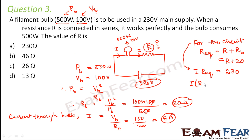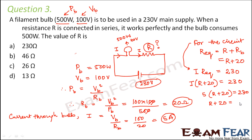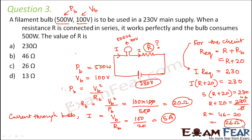Substituting I = 5: 5 × (R + 20) = 230, so R + 20 = 46, therefore R = 26 ohms. The value of the resistance R is 26 ohms. These problems are not complicated — you just need to know Ohm's law and the relation between power, voltage, and resistance, and always draw a circuit diagram first.